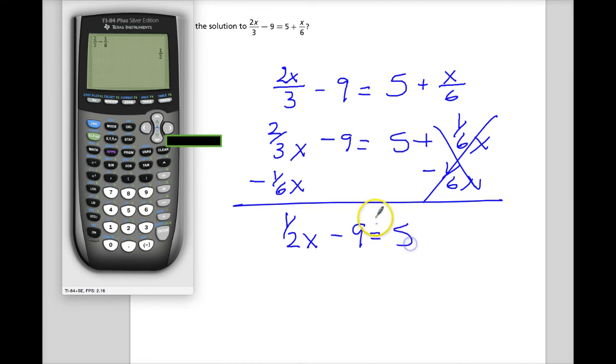Minus 9 equals 5. Add 9 to both sides. Those cancel, and I get 14.